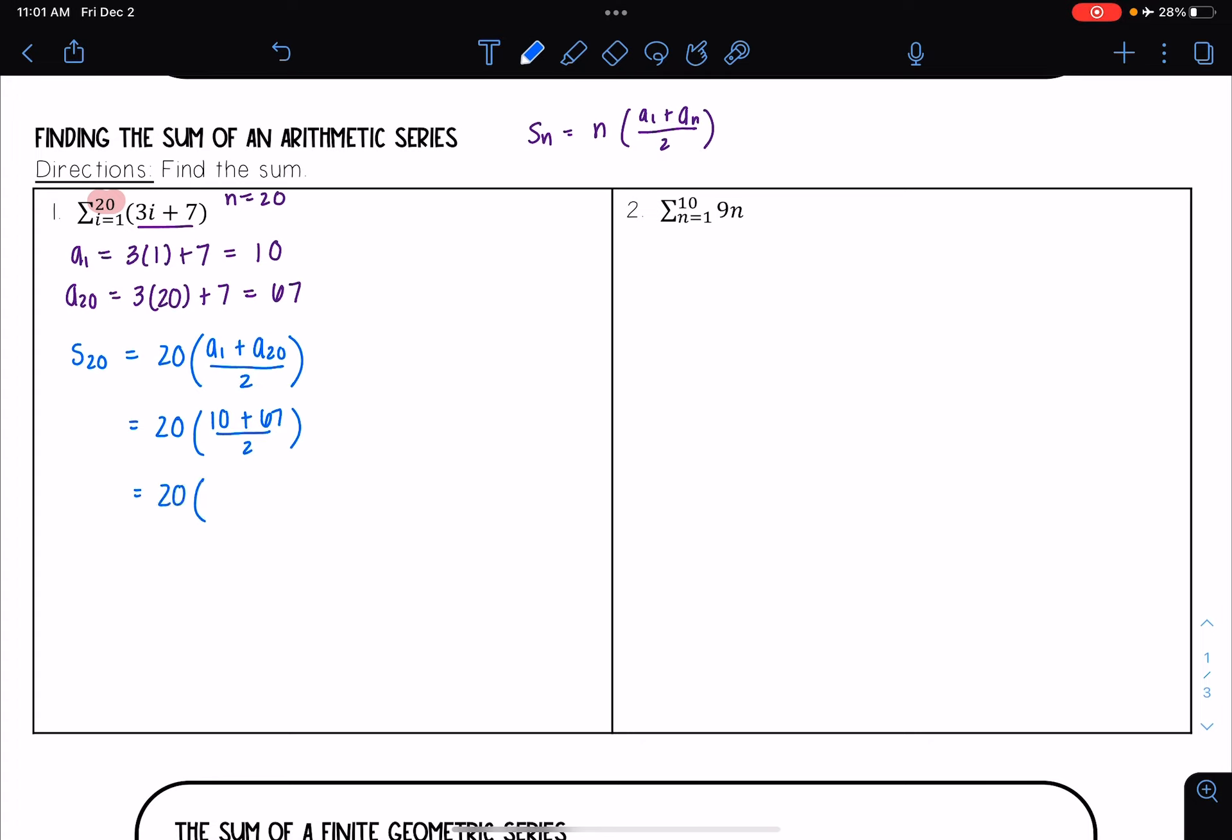And then now I'm going to simplify this out. So 10 plus 67 I get 77 over 2. And when you multiply that out you get that this is equal to 770.